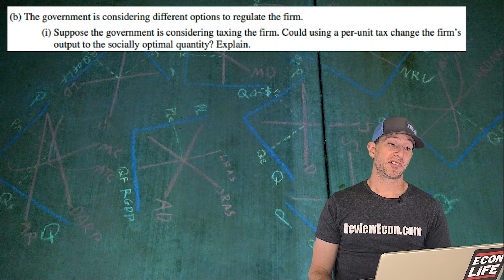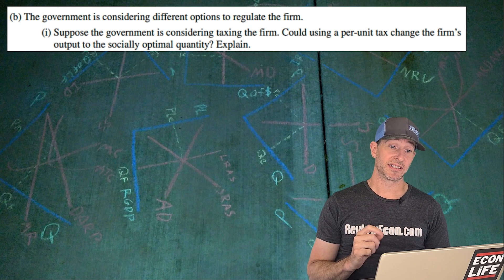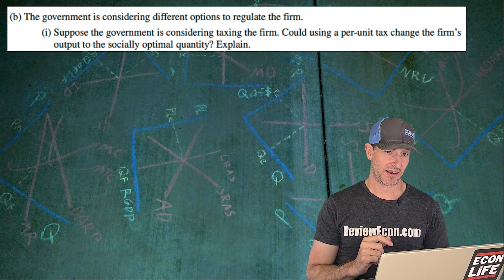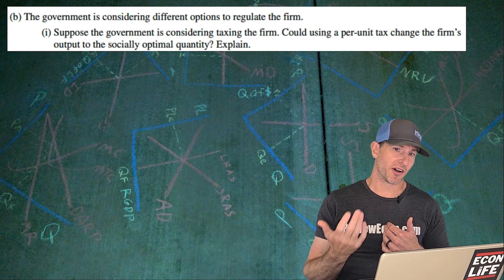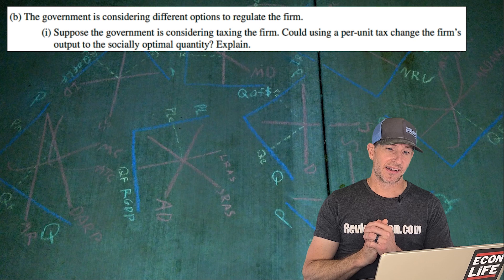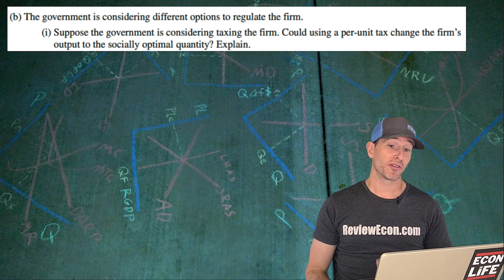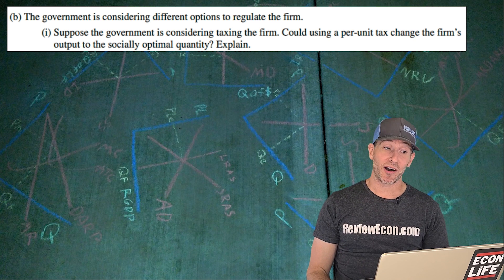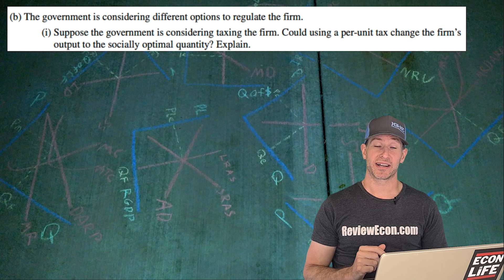For the next part, we're going to suppose that the government is going to consider taxing the firm. Remember that monopolies underproduce and overcharge. The question is, could putting a per unit tax change the firm's output to the socially optimal quantity and explain?